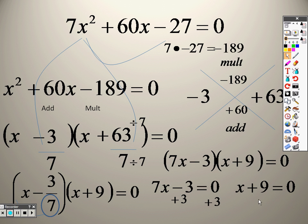I have to add 3 on both sides and subtract 9 on that one. So I get 7x equals 3, and this is already done, x equals negative 9. So, divide both sides by 7, and we get x equals 3 7ths, and x equals negative 9 as our answer.